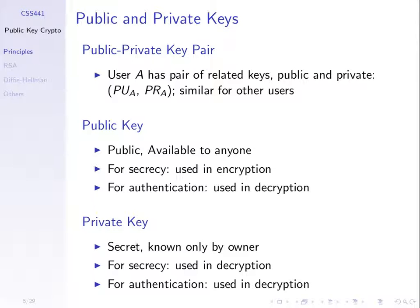Other users also have a key pair. By definition the public key is available to everyone — you can tell anyone your public key — and the private key you must keep secret. We use the keys for encryption and decryption. In some algorithms we can use them in different orders: encrypt with the public key and decrypt with the private key, or encrypt with the private key and decrypt with the corresponding public key. If something is encrypted with PU_A, the ciphertext can only be decrypted with PR_A, and vice versa.